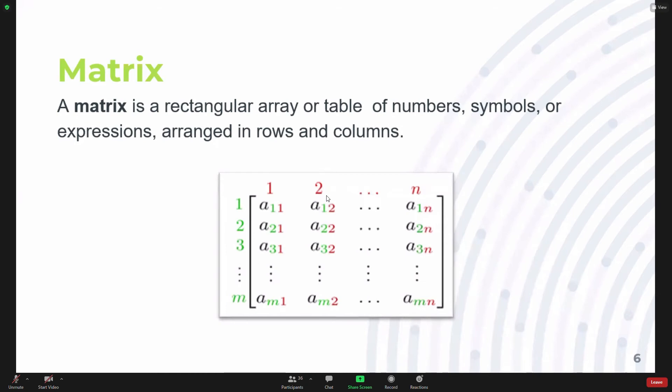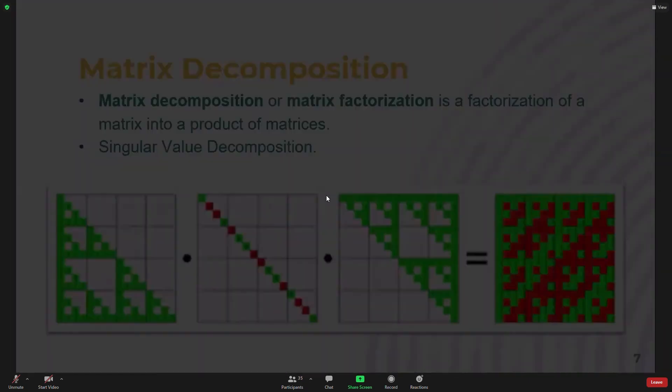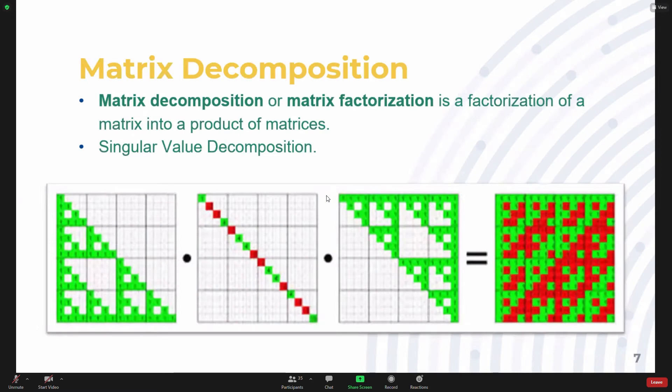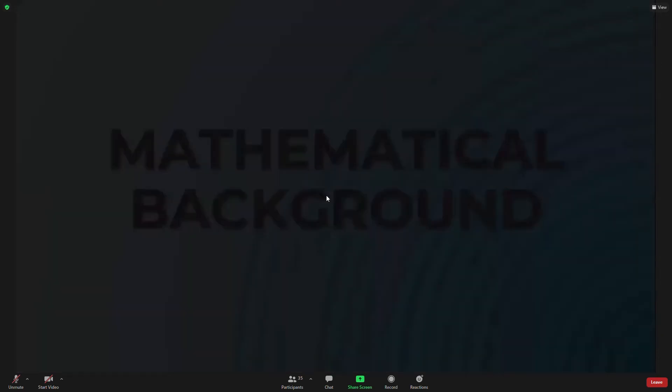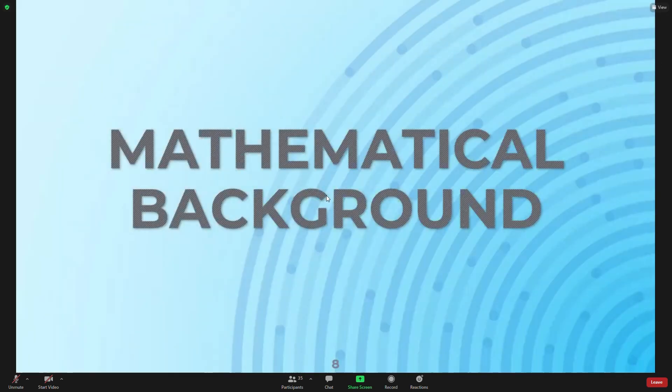Matrix. A matrix is a regular array or table of numbers, symbols, objects, and expressions arranged in rows and columns. This matrix undergoes operations such as matrix decomposition. Matrix decomposition or matrix factorization is factorization of a matrix into a product of matrices. In mathematics, there are various types of matrix decomposition, but for the image processing perspective, we are going to study singular value decomposition. Let us know about singular value decomposition.